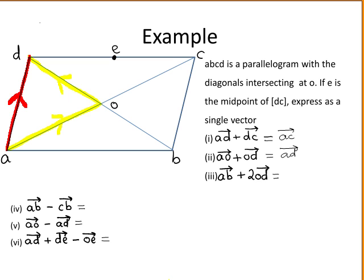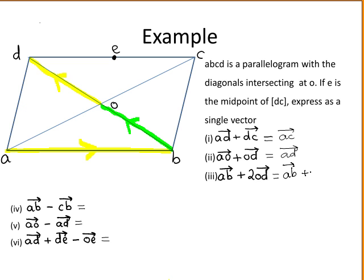The third part asks you to find vector AB plus twice the vector OD. This is a little more difficult than the first two parts. To add these vectors we need to line up the start of the second vector to the end of the first. Looking at vector OD, you can see another vector equal to OD, which is vector BO. These vectors are equal since the diagonals of a parallelogram bisect each other, so they have the same length, the same direction, and are parallel. Therefore they are equal vectors. So this can be rewritten as vector AB plus twice vector BO.